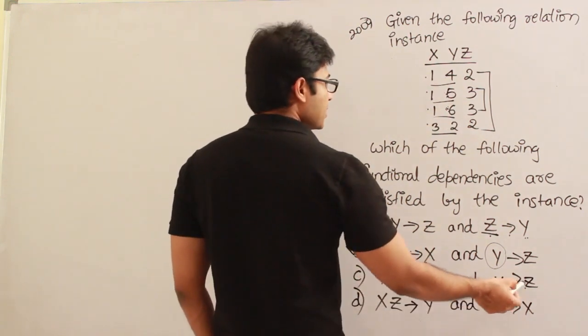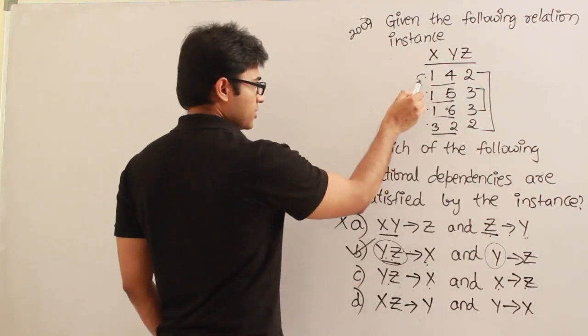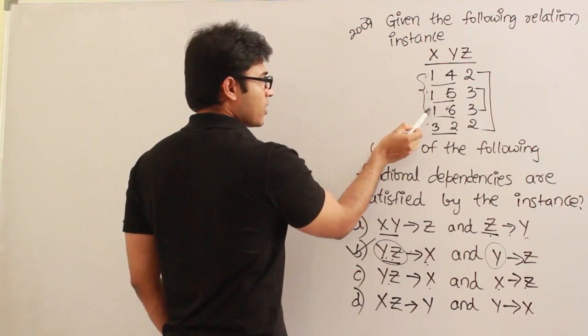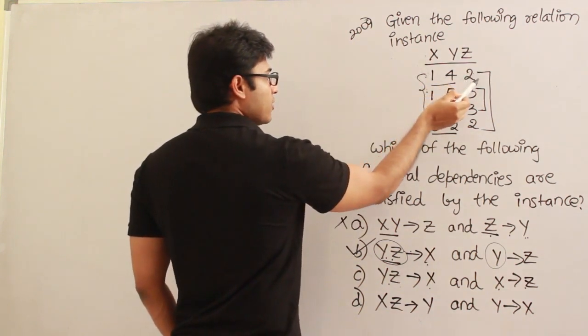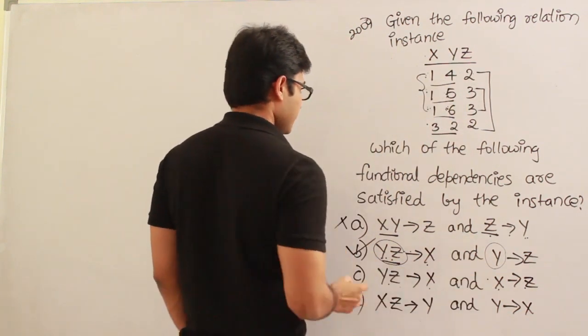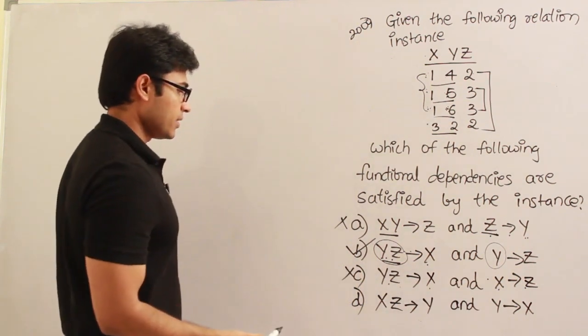What about YZ derives X? Yes, it is already true, it holds. What about X derives Z? See this X, there is repetition: 1,1,1 is there. For a value of 1 given for X, the value of Z is either 2 or 3. Therefore this one doesn't hold, it is not satisfied by the instance.